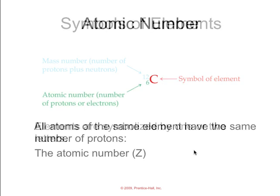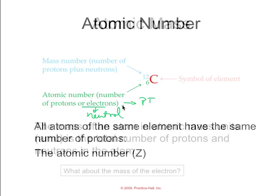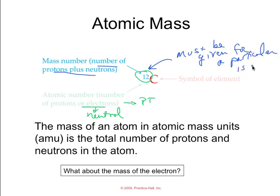Quick reminder of a symbol that you may see for an element. You have the actual symbol of the element. This number is the atomic number, the whole number on the periodic table. It is equal to the number of protons or the electrons if the atom is neutral. This number up top is the mass number, which is the number of protons plus neutrons. This must be given for a particular isotope.